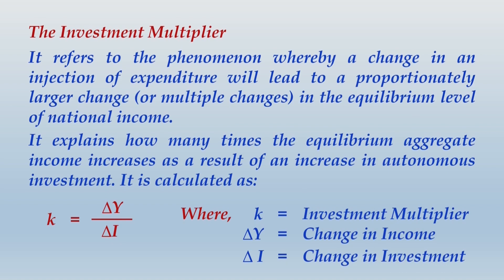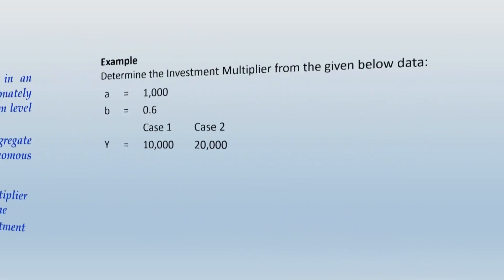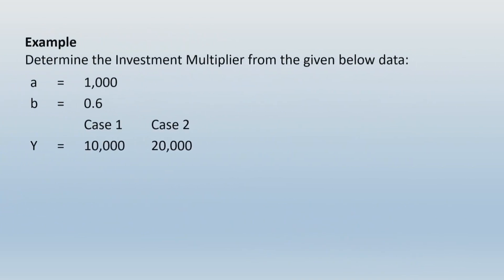Just looking at these notes you will not be able to understand this concept — you will require some background understanding. Let us take an example to understand it. The example asks us to determine the investment multiplier from the given data: a = 1000, b = 0.6, Y = 10,000 in Case 1, and Y = 20,000 in Case 2.